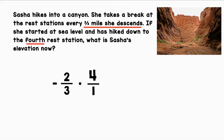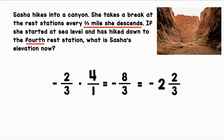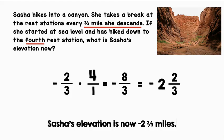Now we can multiply straight across. 2 times 4 equals 8, and 3 times 1 equals 3. A negative times a positive is a negative. Now let's simplify: 8 divided by 3 equals 2 with 2/3 left over, and our answer is still negative. Sasha's elevation is now negative 2 and 2/3 miles.